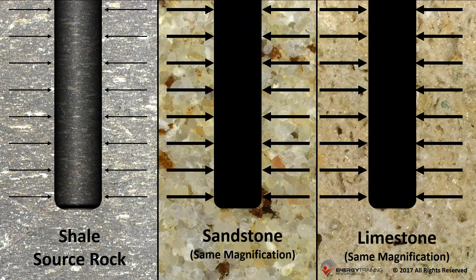For that reason, it was long thought that it would be forever impossible to produce from source rock. However, a portion of the oil and gas in the source rock escapes over time and can accumulate in areas where it's easier to produce.